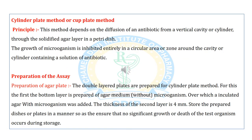Now we are coming to the cup plate method or cylindrical plate method. The principle of this method depends upon the diffusion of an antibiotic from a vertical cavity or cylinder through the solidified agar layer in a petri dish. The growth of microorganisms is inhibited entirely in a circular area or zone around the cavity or cylinder containing a solution of antibiotics.